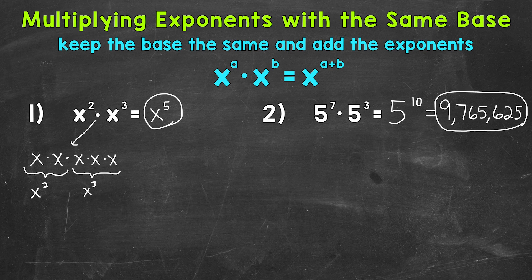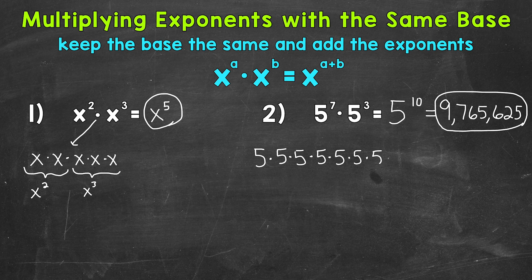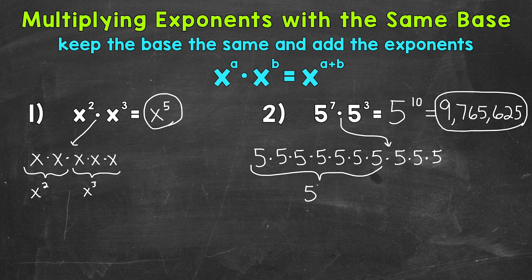Now let's take a look and see how this works after we break it down, just like we did for number 1. So 5 to the power of 7 means 5 times 5 times 5 times 5 times 5 times 5 times 5. Then we bring our multiplication sign down in the middle, and then 5 cubed is 5 times 5 times 5. So we have 5 to the power of 7 represented right here, then 5 cubed represented right here, and that gives us 5 to the power of 10.